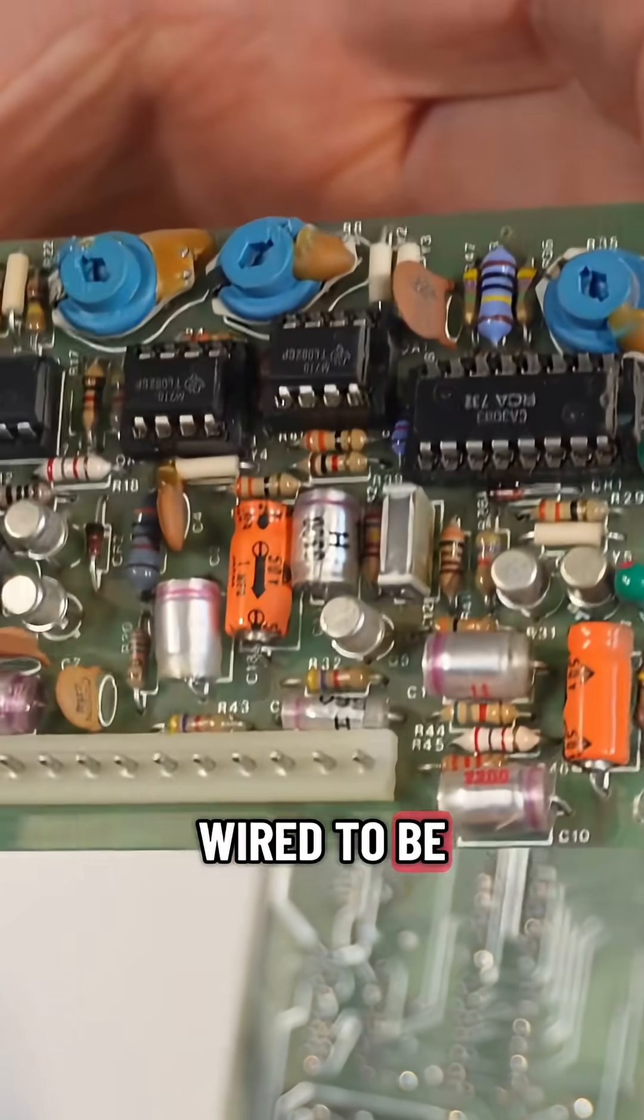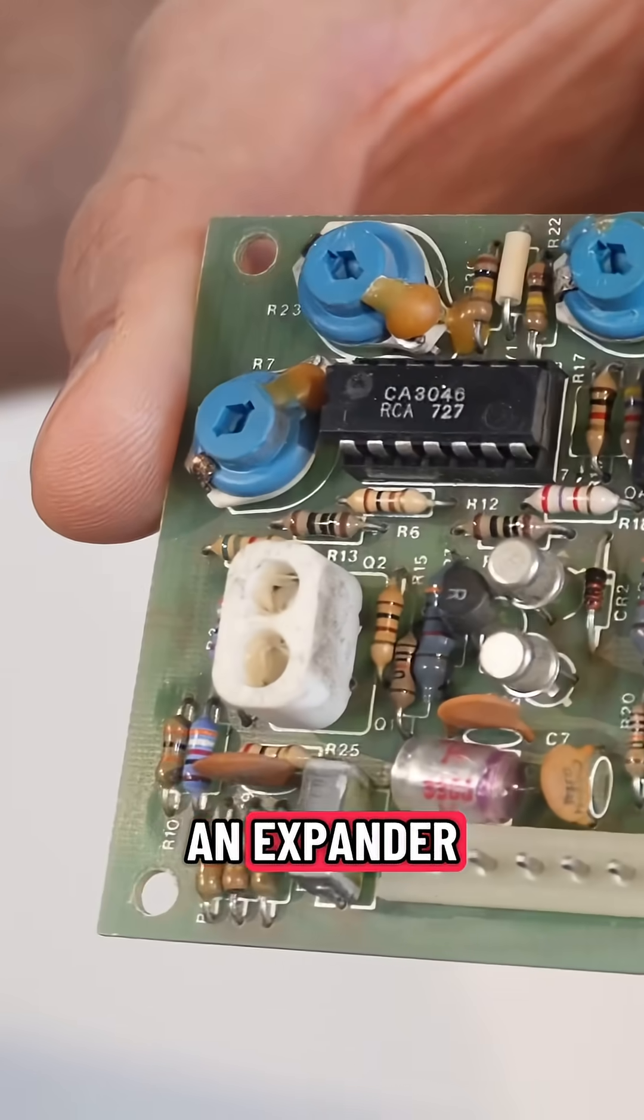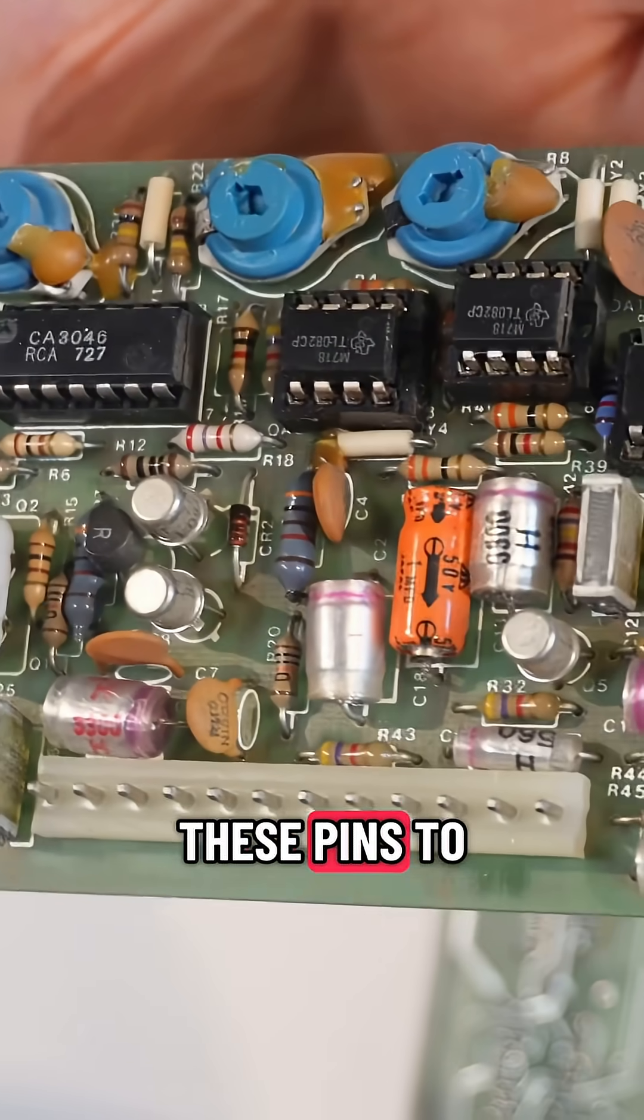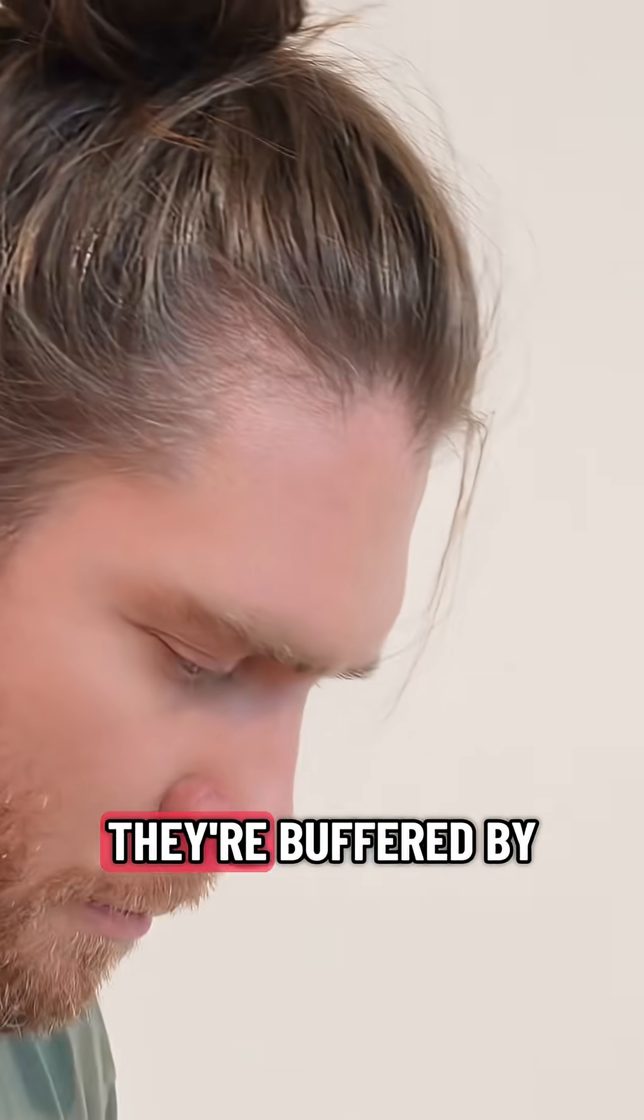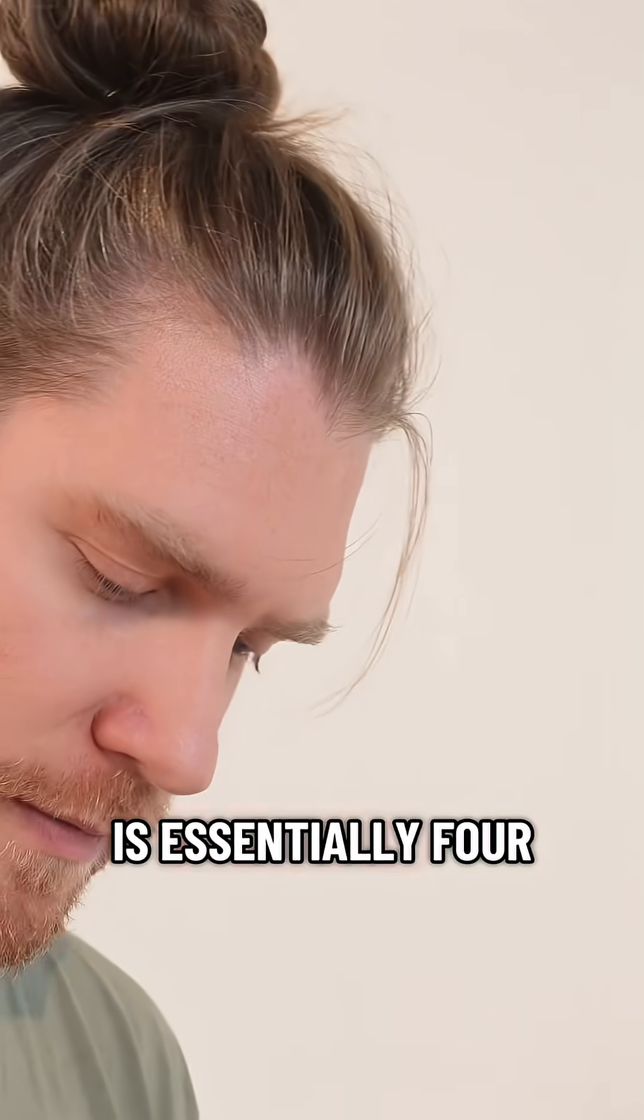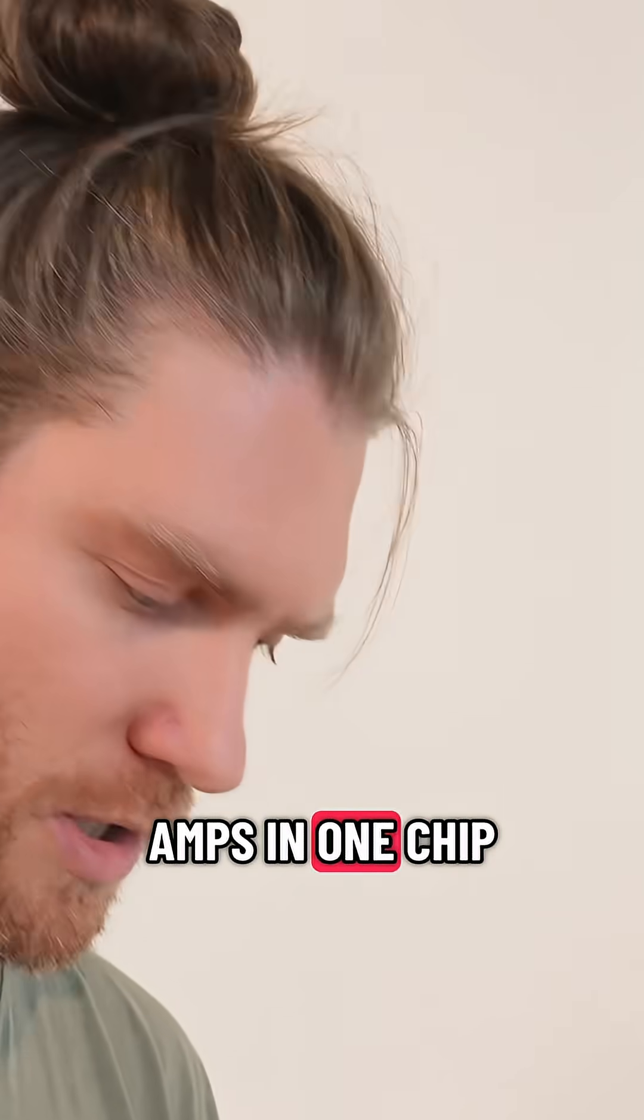This can be wired to be a compressor or an expander, depending on how you hook up these pins to the rest of the unit. And they're buffered by IC1, which is essentially four 741 op amps in one chip.